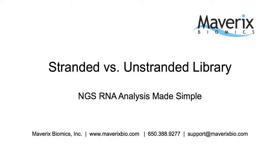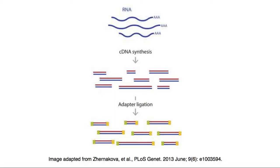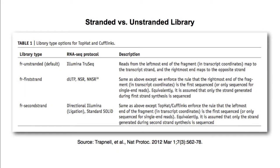For transcriptome analysis, conventional RNA-seq libraries are generated by the synthesis of double-stranded cDNA, followed by the addition of sequencing adapters. This unstranded method of library construction does not retain information on the direction of transcription.